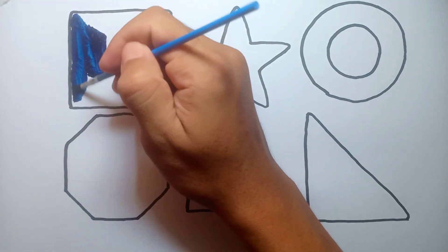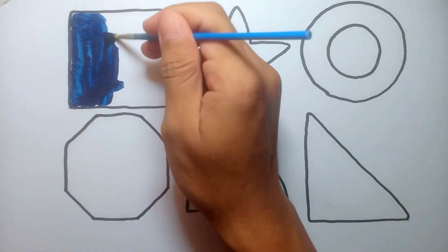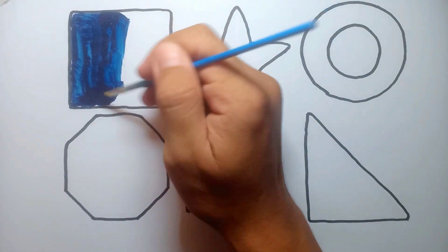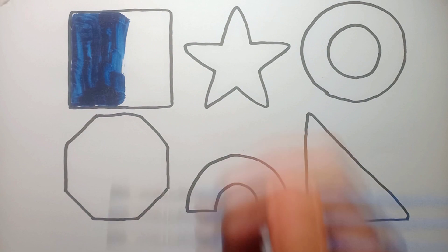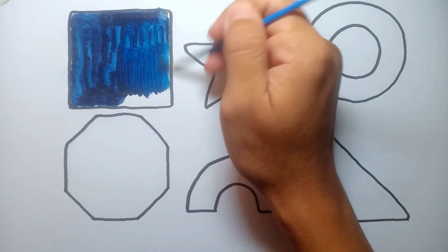Okay, let's start coloring shapes. Blue color. Blue square.